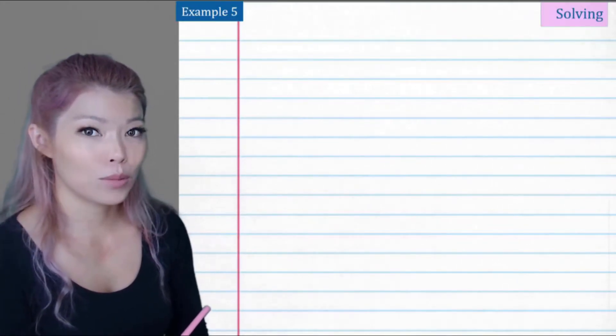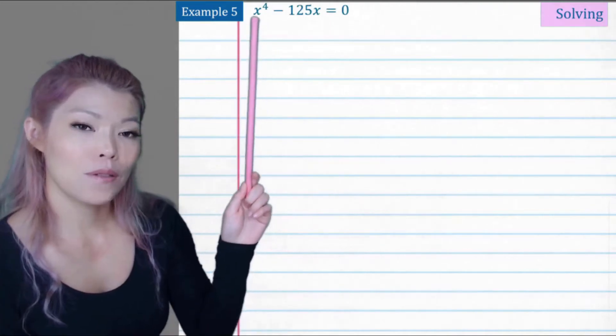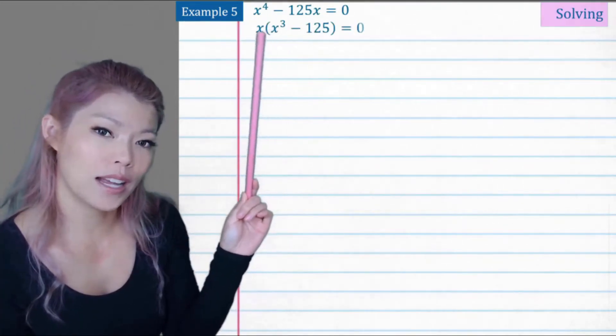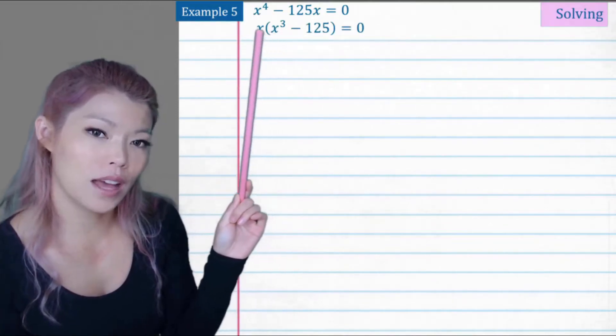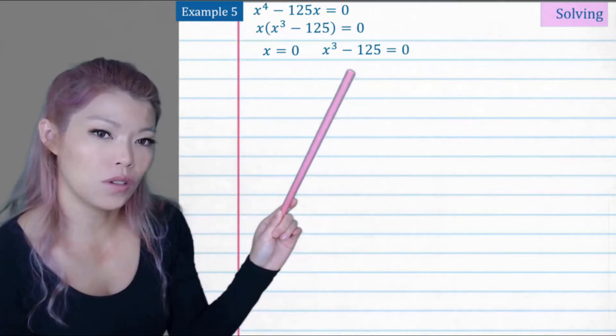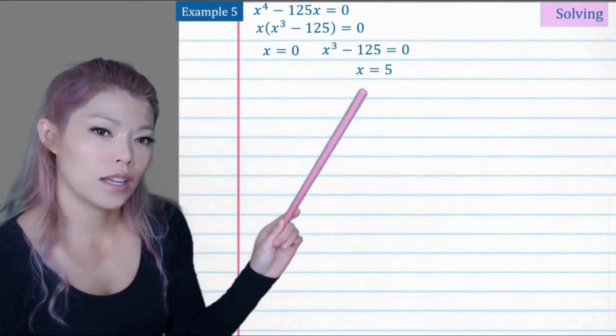Let's do some examples with solving. x to the power of 4 minus 125x. What can we do? We take x out and we're left with that. So that x is equal to zero. And x cubed minus 125 equals zero, so cube root that, we get five.